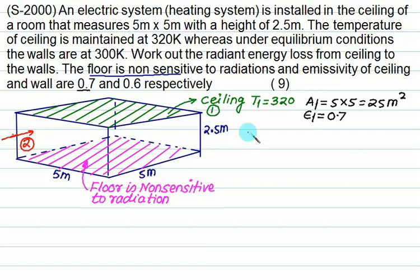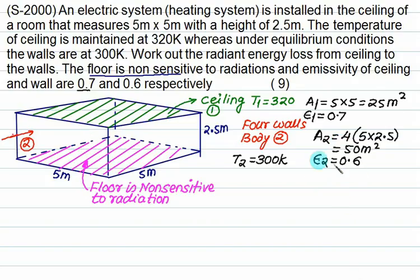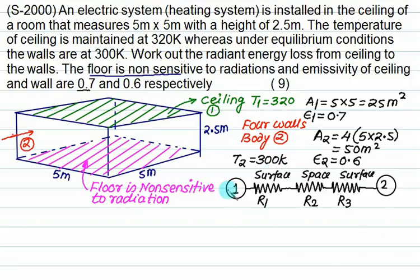The 4 walls are body number 2. Each wall has an area of 5 × 2.5 m, so total area A2 = 4 × 12.5 = 50 m². Emissivity of all 4 walls is 0.6, maintained at T2 = 300 K. Shape factor F11 = 0 because the ceiling is flat, so F12 = 1.